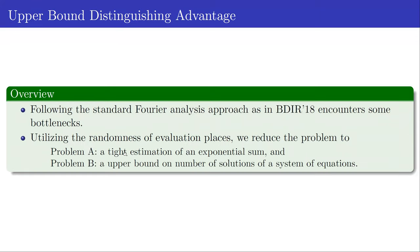We want to upper bound the distinguishing advantage. We follow the standard Fourier analysis approach as in the BDI paper. However, we encounter some bottlenecks. To overcome these, we utilize the randomness of evaluation points so that we can reduce the problem to two sub-problems. For problem A, we need an estimation of an exponential sum. For problem B, we need an upper bound on the number of solutions of a system of equations.